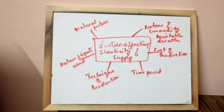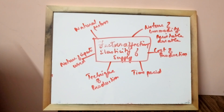Next: nature of inputs used. Elastic supply depends on the nature of inputs. If raw materials and factors of production are of a general nature and are easily available, then supply will be elastic. However, if the inputs are of a specific or specialized nature, then supply is inelastic.